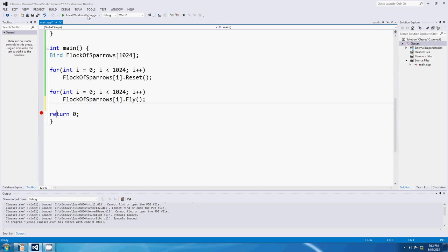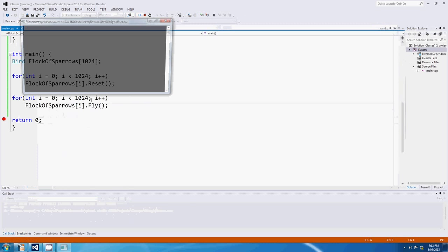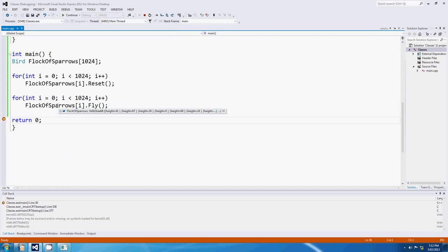If I just hit play, it should have a breakpoint there on the return. If I hit play, we should be able to see the heights that they chose. There it is. So, let's just... Okay, there we go. So sparrow number zero chose a height of 41. Sparrow number one chose a height of 67. Sparrow number two chose 34, then zero, then 69, 24. There you go. So every single one of the 1024 birds is now keeping track of its own height. And that's what object-oriented programming is all about. Really, really cool.